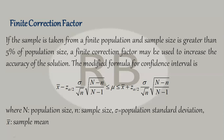When the population size is finite, we use a finite correction factor in the confidence interval formula to increase the accuracy of the solution. So the modified confidence interval formula becomes: x-bar minus z-alpha/2 times sigma by root n times square root of (N minus n) divided by (N minus 1), and this is the upper limit.